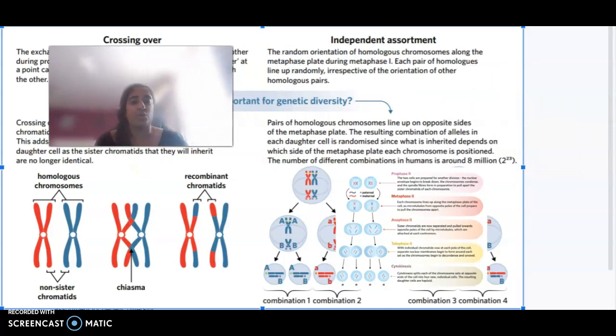Independent assortment is basically the random orientation of homologous chromosomes along the metaphase plate during metaphase one, where each of our pair of homologous chromosomes line up irrespective of the orientation of the pairs. This causes different combinations, 2 to the power of 23, resulting in about 8 million different combinations that can be formed.